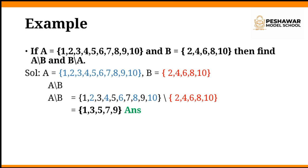First of all, you have to find A difference B. For this purpose, set A equals {1, 2, 3, 4, 5, 6, 7, 8, 9, 10} and set B equals the even numbers {2, 4, 6, 8, 10}. Write the elements of set A before the difference sign which is {1, 2, 3, 4, 5, 6, 7, 8, 9, 10}, then difference {2, 4, 6, 8, 10}.